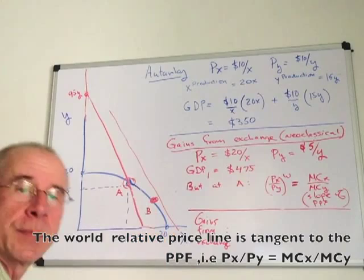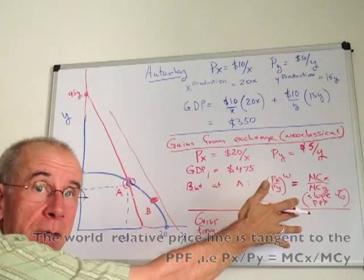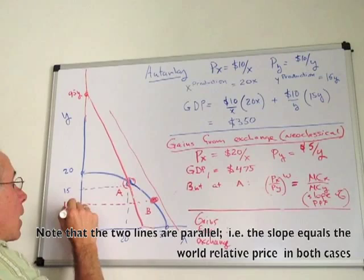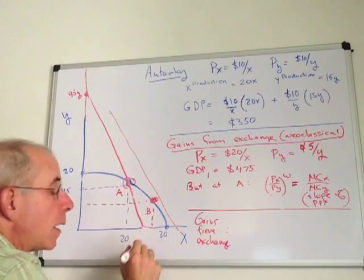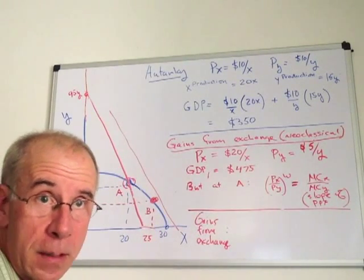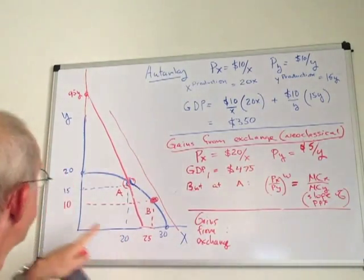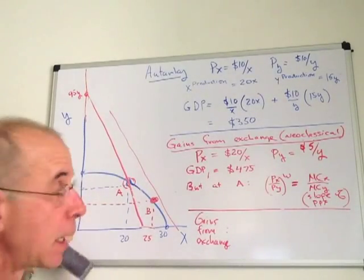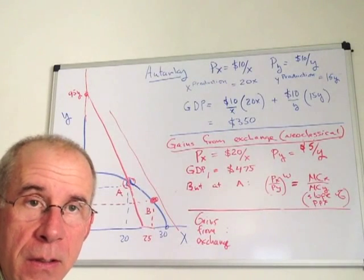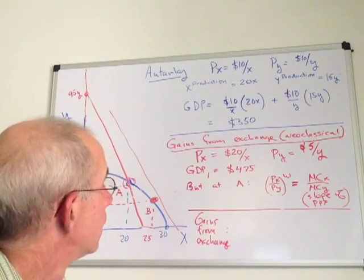So here we've got this point B, which graphically we can understand from this relationship. And I'm going to put some numbers into this. Let me be clear about that, these are pulled out of the air. All I know is that you increase the production of X, you decrease the production of Y, and the combination is going to be such that the relative prices in the international market equal the relative costs in the domestic market in terms of production.